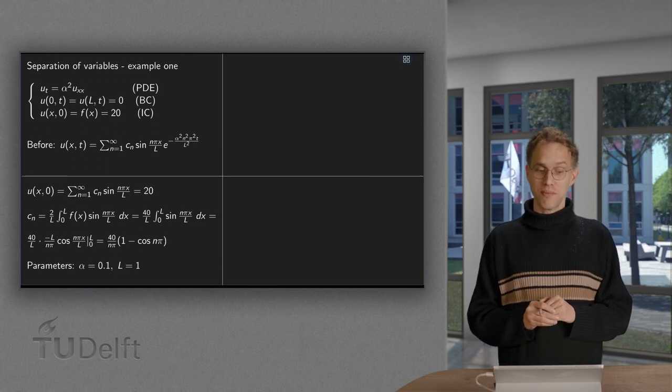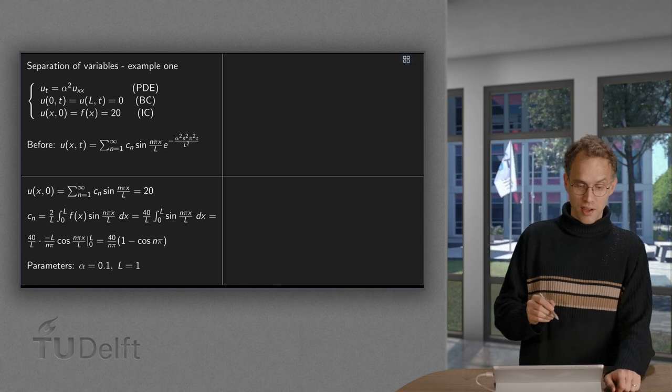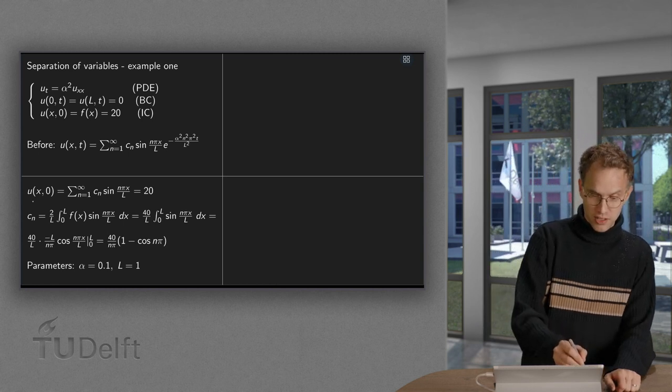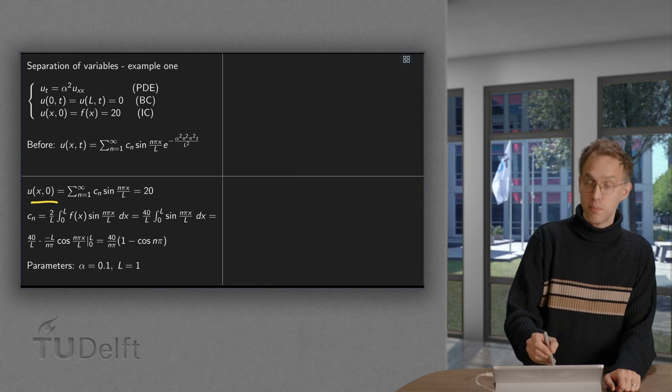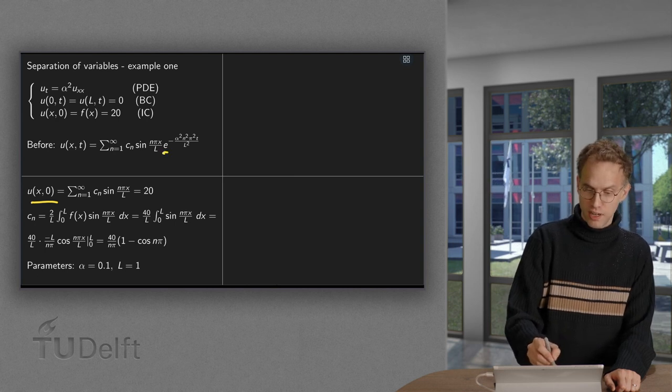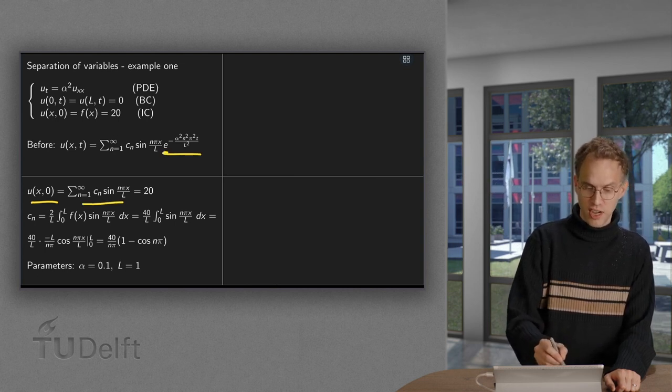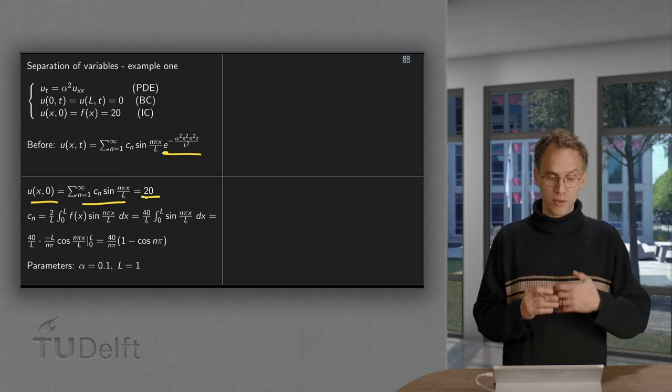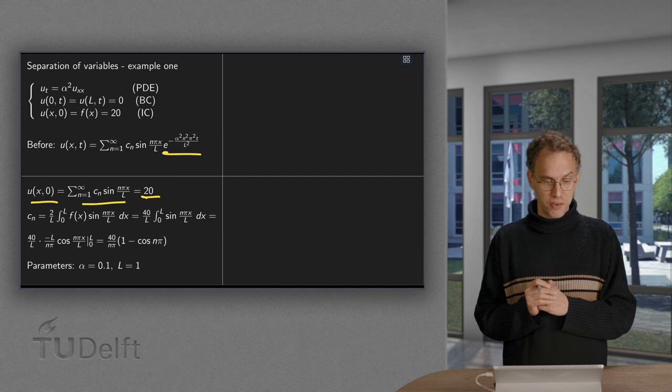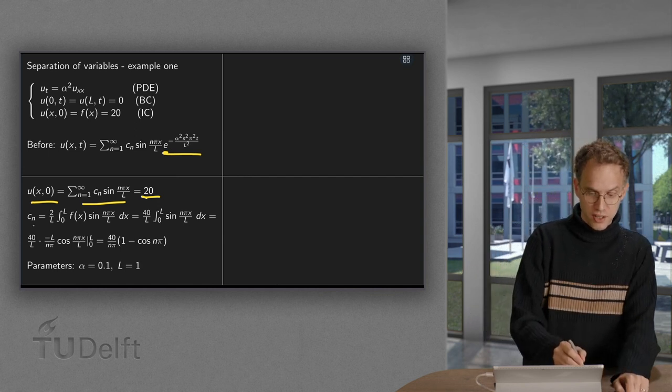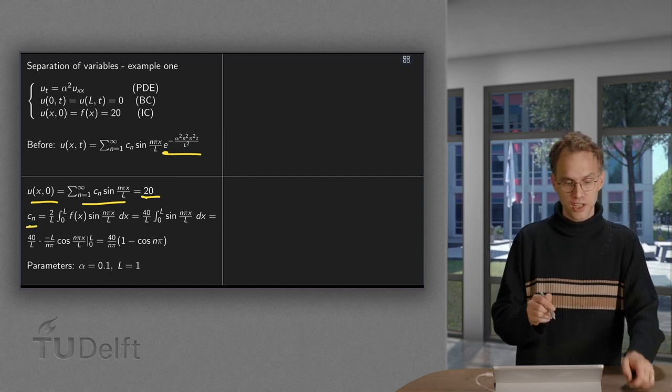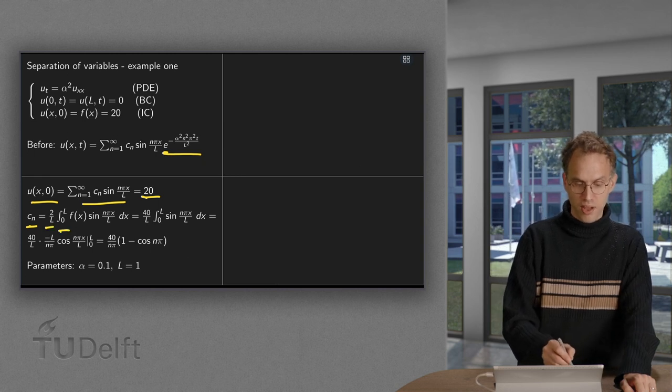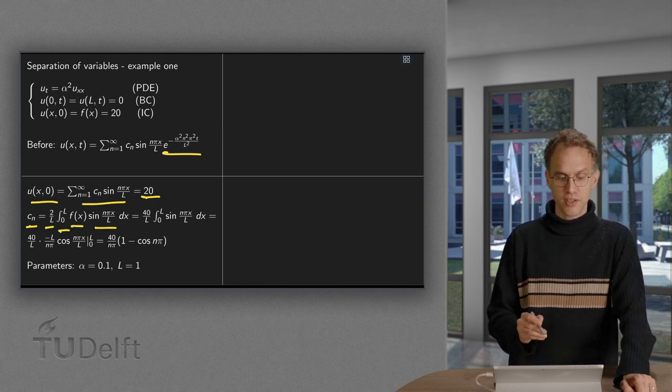Well, let us see what happens. We have to use u at time zero. Plugging in zero here gives a 1, so it gives us the sum of the sines has to be equal to 20. So we have to compute the Fourier series of 20. So the coefficients equals 2 over l integral from zero to l f of x sine n pi x over l dx.